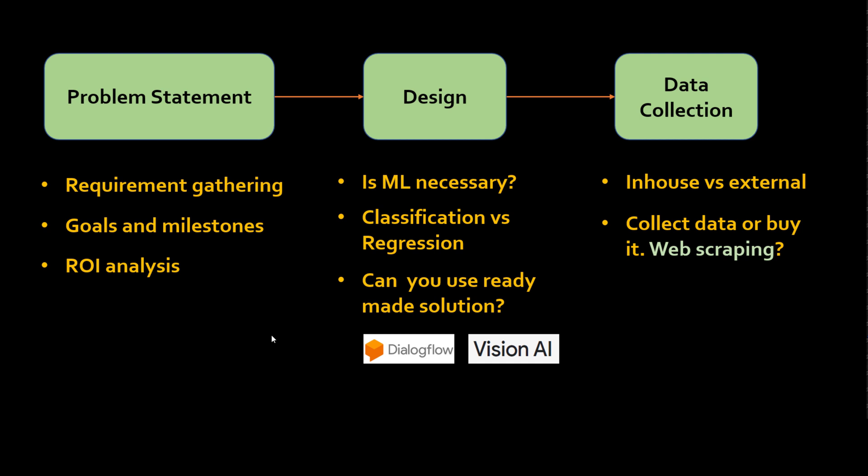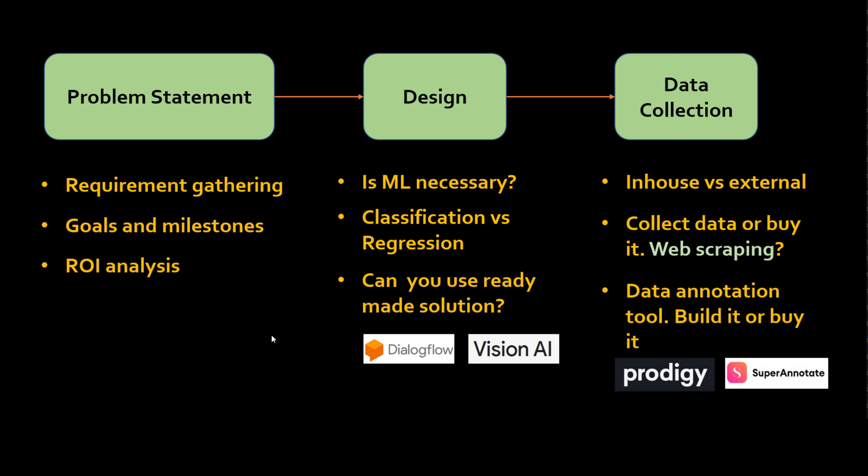Then comes the data annotation phase. For example, if you are doing named entity recognition, you have text and need to tag specific entities, requiring an annotation tool. You need to decide whether to build that tool in-house or use ready-made tools such as Prodigy or SuperAnnotate. The business manager must evaluate these tools for budget and timeliness. Also critical are data privacy concerns — for example, Google reportedly faced a lawsuit when training the BERT model on website articles whose publishers did not consent to their use.